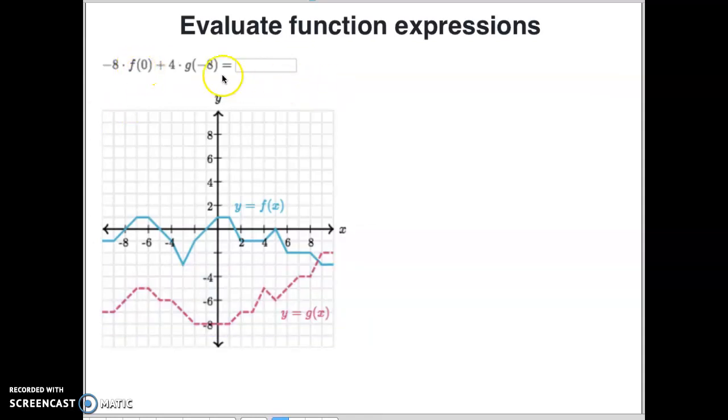Now so what we're going to do is we're going to rewrite this equation. But instead of putting F of 0 and G of negative 8, I'm going to just put in parentheses. So take a look at this right here. I've rewritten the equation right here where it's negative 8 times, and then I put in parentheses what we're going to plug in for the F of 0 plus 4 times what I'm going to put in there for the G of negative 8. So how do you find that? Well, remember that it's called the F of X function or the G of X function, meaning the number in this parentheses stands for the X coordinate.